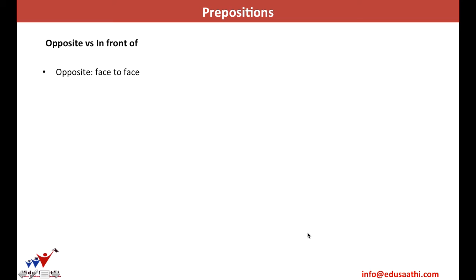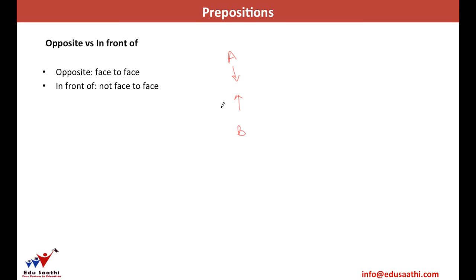There is a difference between 'opposite' and 'in front of.' If two things are face-to-face with each other — for example, A and B in counterpositions facing each other — they are 'opposite.' But if A is in the counterposition of B but not face-to-face with B, it becomes 'in front of.'